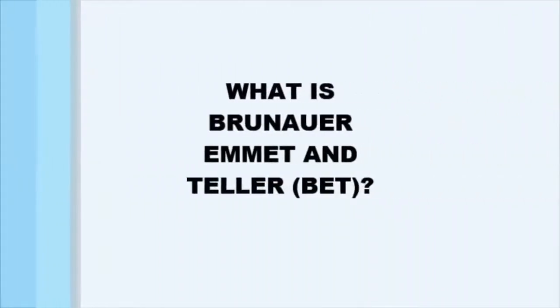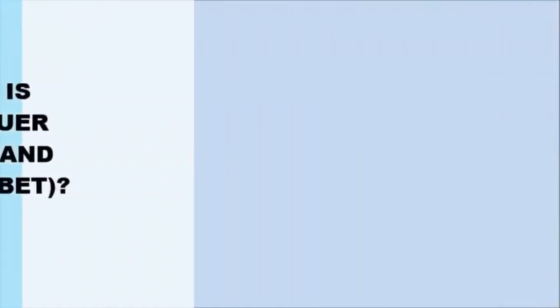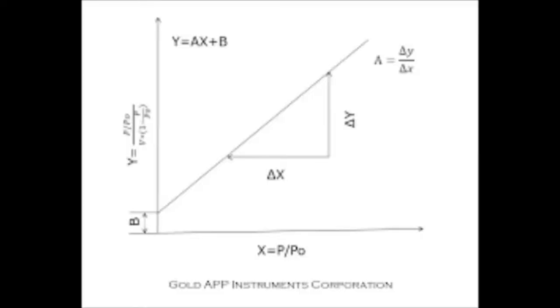Brunauer, Emmett and Teller is used to measure the specific surface area, including the four major applications. This data is utilized to anticipate the dissolution rate, as this is corresponding to the specific surface area.